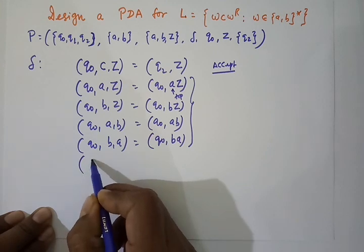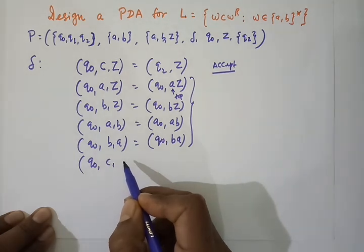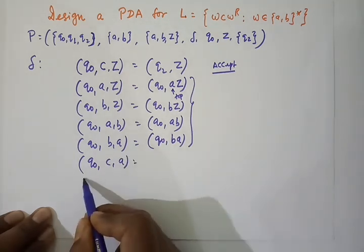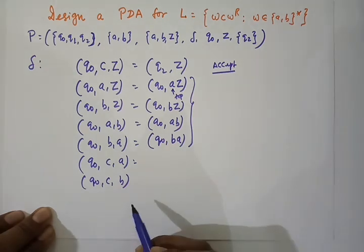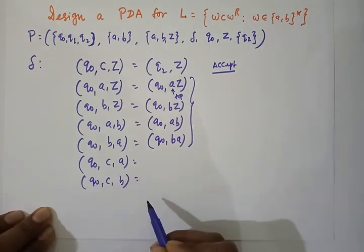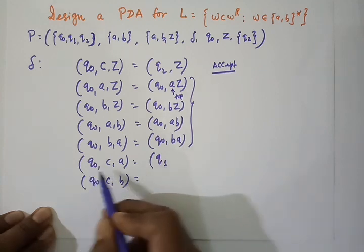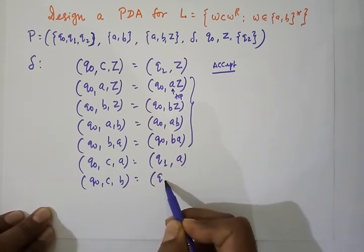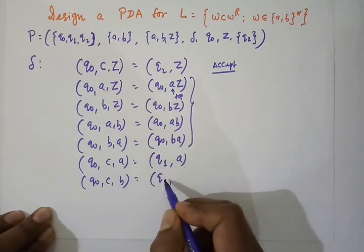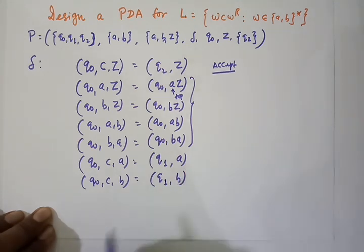The moment C is encountered, we don't know what will be at the top of the stack — it can be either A or B. So both transition functions must be defined. We simply change the state from Q0 to Q1, replacing A by A and B by B — just changing the state. Now we know the middle of the string is reached, so the rest part is W^R, the reverse of W.